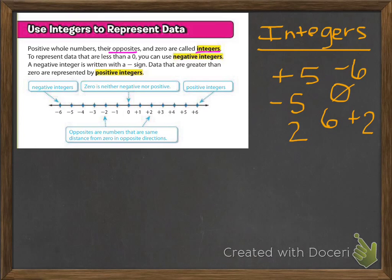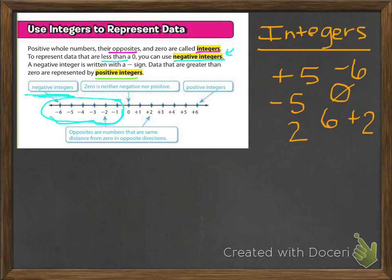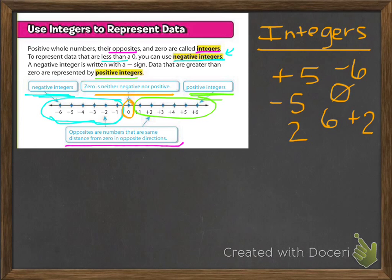To represent data that are less than 0, you can use negative integers. A negative integer is written with a negative sign. Data that are greater than 0 are represented by positive integers. The negative integers are all going to be found behind 0, so I'm going to use this teal color to represent all of those. Zero is neither positive nor negative, so we're going to make that its own special one. Positive integers we're going to represent with the green ones — they're going to be found to the right on the number line. Opposites are numbers that are the same distance from 0 in opposite directions.